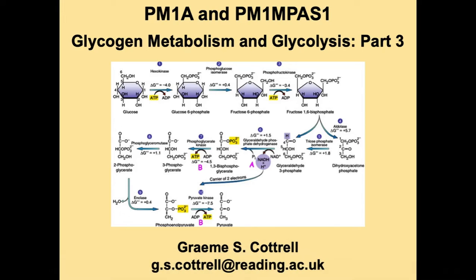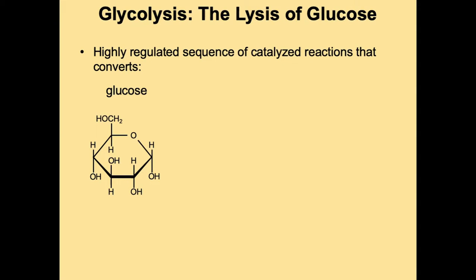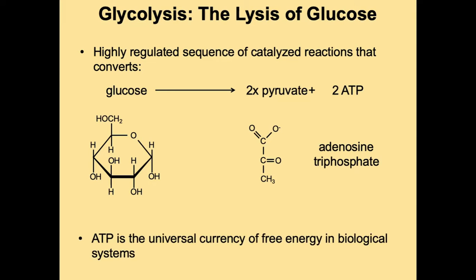Welcome to the third and final video on glycogen metabolism and glycolysis. Today we're going to look at how glucose is used to produce energy through a process called glycolysis, discussing the key enzymes of this pathway and how they are regulated by molecules like ATP. Glycolysis is the breakdown of glucose, producing two molecules of pyruvate and two molecules of ATP — the universal currency of free energy in all biological systems.